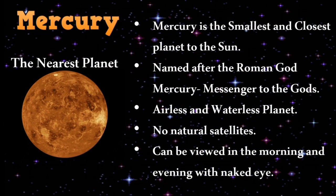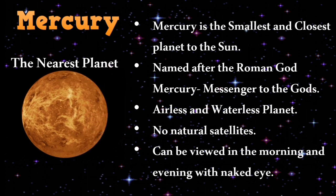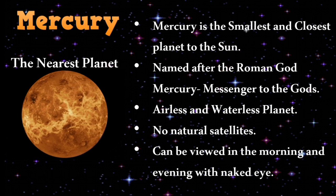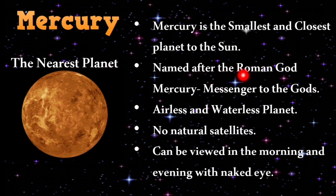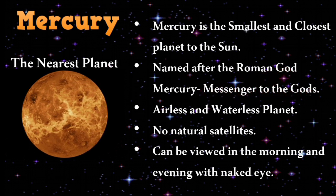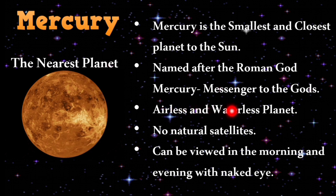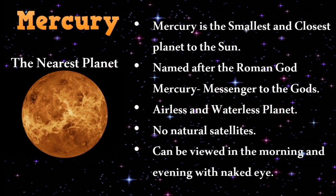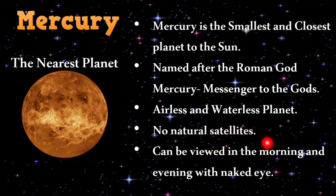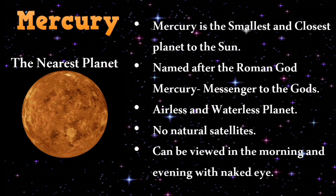Mercury is the smallest and closest planet to the sun. It is named after the Roman god Mercury, meaning messenger to the gods. It is an airless and waterless planet with no natural satellite, and it can be viewed in the morning and evening with the naked eye.